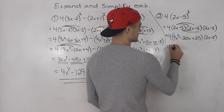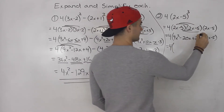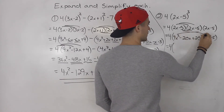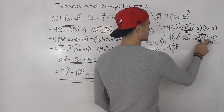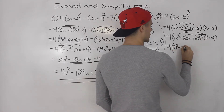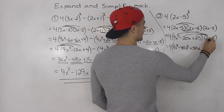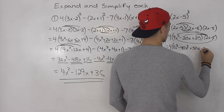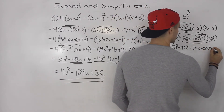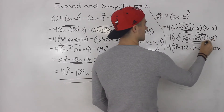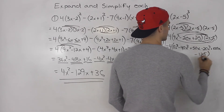Now I would FOIL out these two brackets — there are more terms to deal with so be really careful. Take 2x and multiply by everything inside: 2x times 4x squared gives 8x cubed; 2x times negative 20x gives minus 40x squared; 2x times 25 gives 50x. Then minus 5 times 4x squared gives minus 20x squared; minus 5 times negative 20x gives 100x; and minus 5 times 25 gives minus 125.